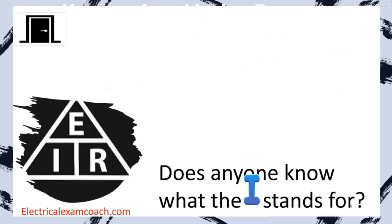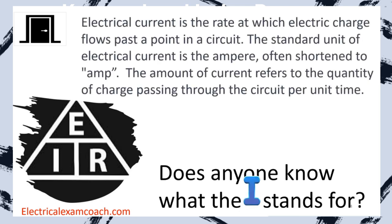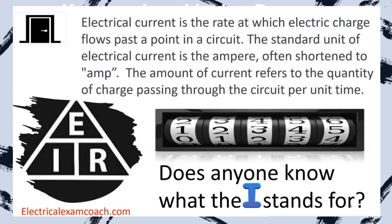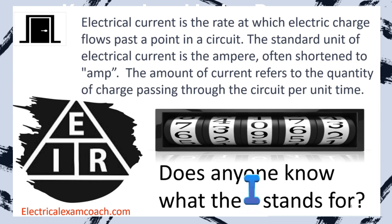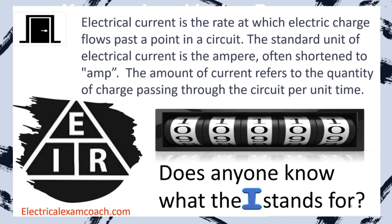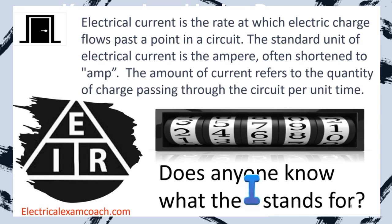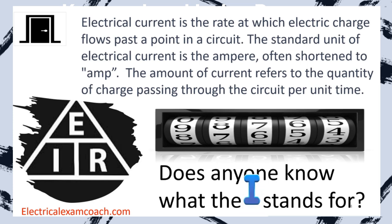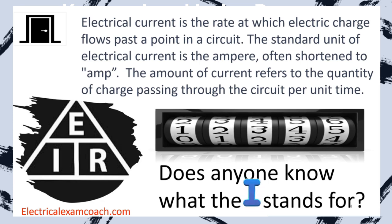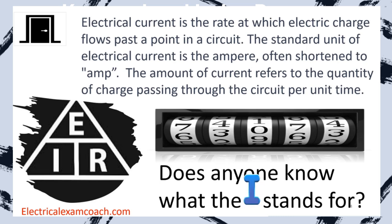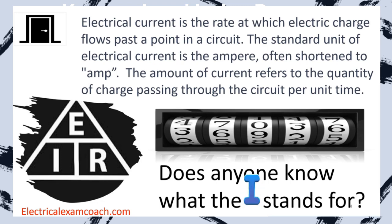The I stands for electrical current, and it's the rate at which the electric charge flows past a point in the circuit. The standard unit of electrical current is the ampere, often shortened to amp, and we're going to call it an amp throughout the rest of our program. The amount of electrical current refers to the quantity of charge passing through the circuit per unit of time. Just remember in this relationship that the I stands for current.